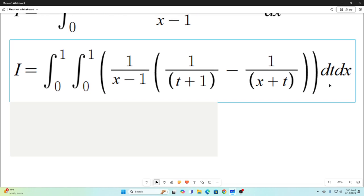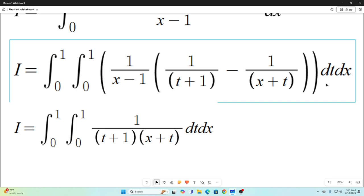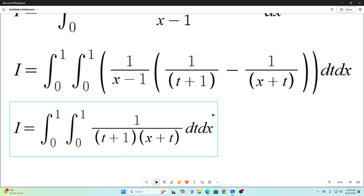Next step is this. Basically, I found a common denominator. I multiplied this by t plus 1 over t plus 1, this by x plus t over x plus t. And what you end up with is x minus 1 over t plus 1 times x plus t. And that x minus 1 cancels with this x minus 1. You're left with nothing but this.